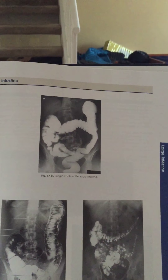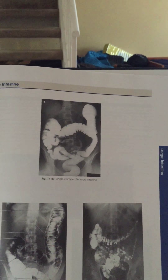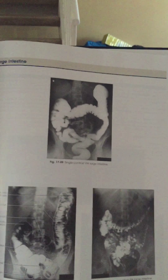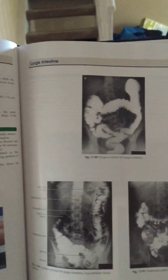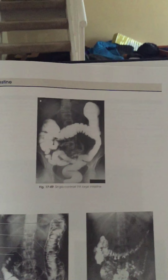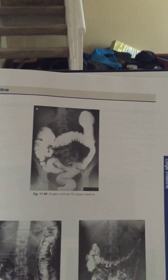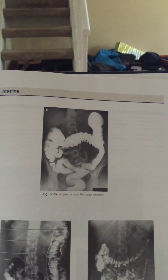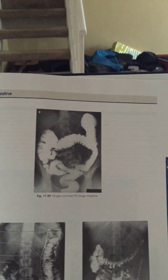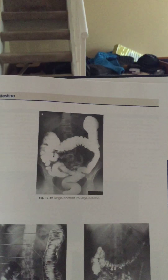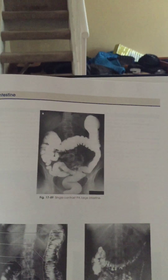Next we're going to be doing the PA KUB after the contrast has been introduced. As this image shows, there is contrast introduced — you can see all the white here. You're going to center the ray perpendicular to the IR, enter the midline of the body at the level of the iliac crest, and use a 14 by 17 inch IR.